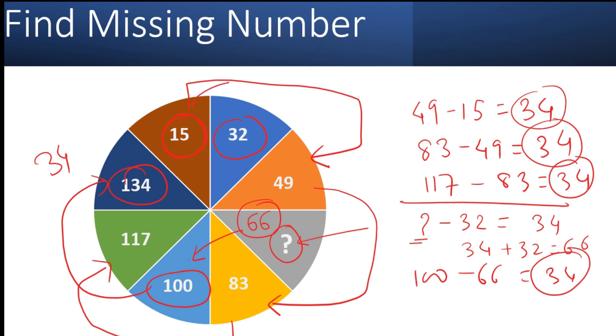So the difference between one alternate step is 34 in the clockwise direction. So I hope you enjoyed this puzzle. Subscribe for more.